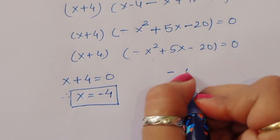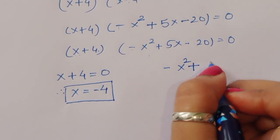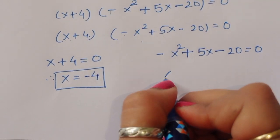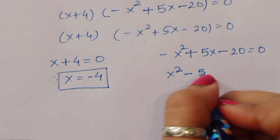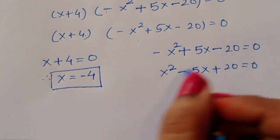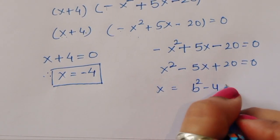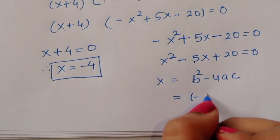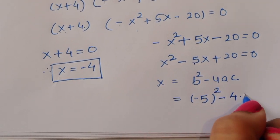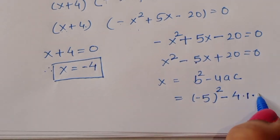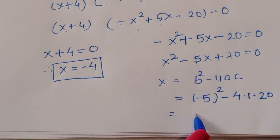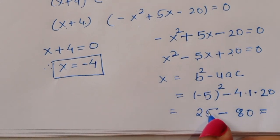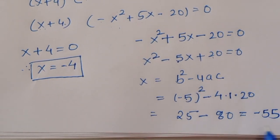For the second equation, minus x squared plus 5x minus 20 = 0. Multiplying through by minus 1 gives x squared minus 5x plus 20 = 0. Now using the quadratic formula, the discriminant b squared minus 4ac equals (−5)² minus 4 times 1 times 20, that is 25 minus 80, which gives minus 55.